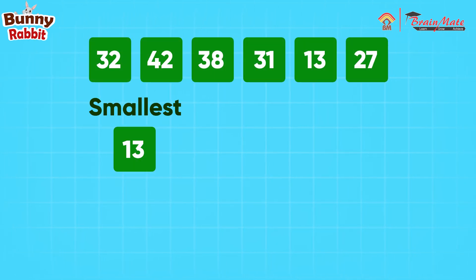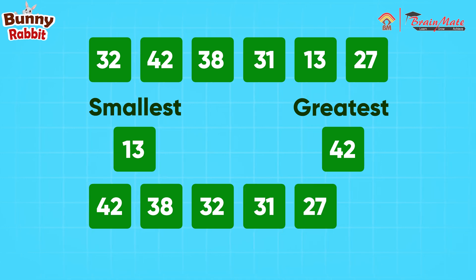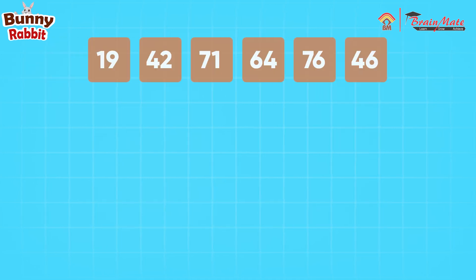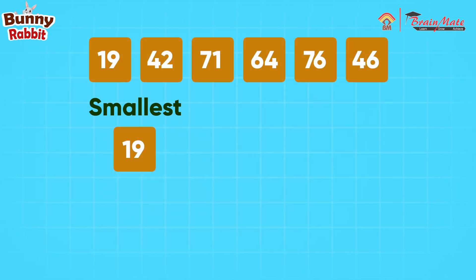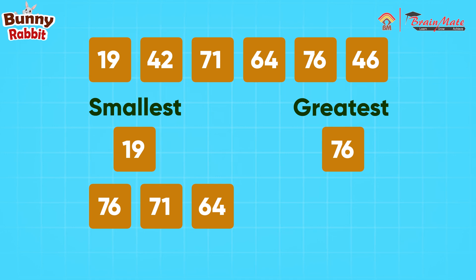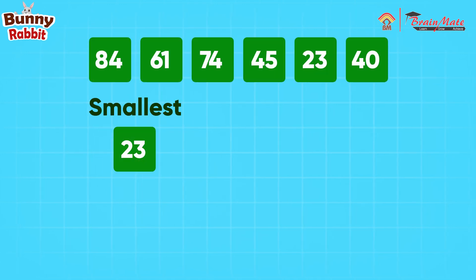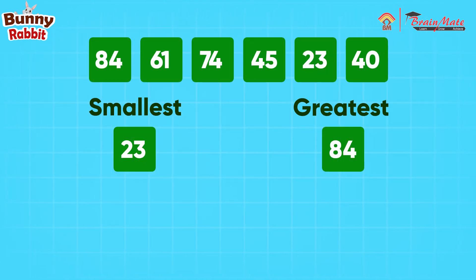Smallest number is 13, greatest number is 42. Descending order is 42, 38, 32, 31. Smallest number is 19, greatest number is 76. Descending order is 76, 71, 64, 46, 42, 19. Smallest number is 23, greatest number is 84.